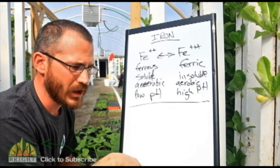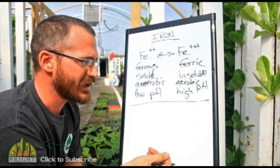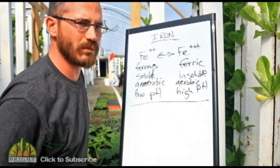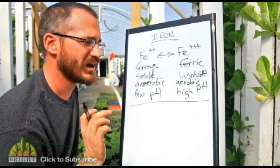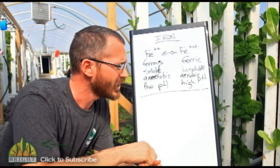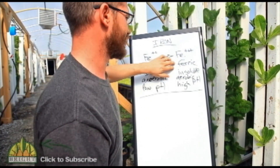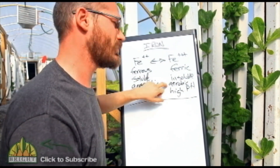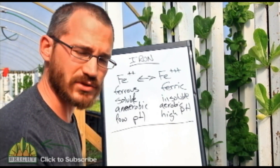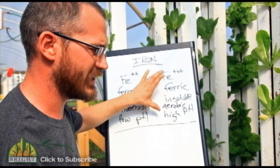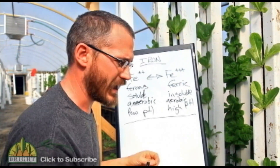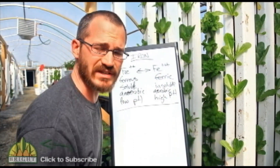In plants, these are called phytosiderophores. When we talk about chelation, we're basically talking about taking ferric iron — this insoluble form — and making it soluble by attaching a special molecule to it. These special molecules are usually amino acids or other organic molecules. They bind to the insoluble iron that exists in aerobic, relatively high-pH systems and make it so it can dissolve into the solution, move through the system, and land on the plant roots so the plants can take that iron up.